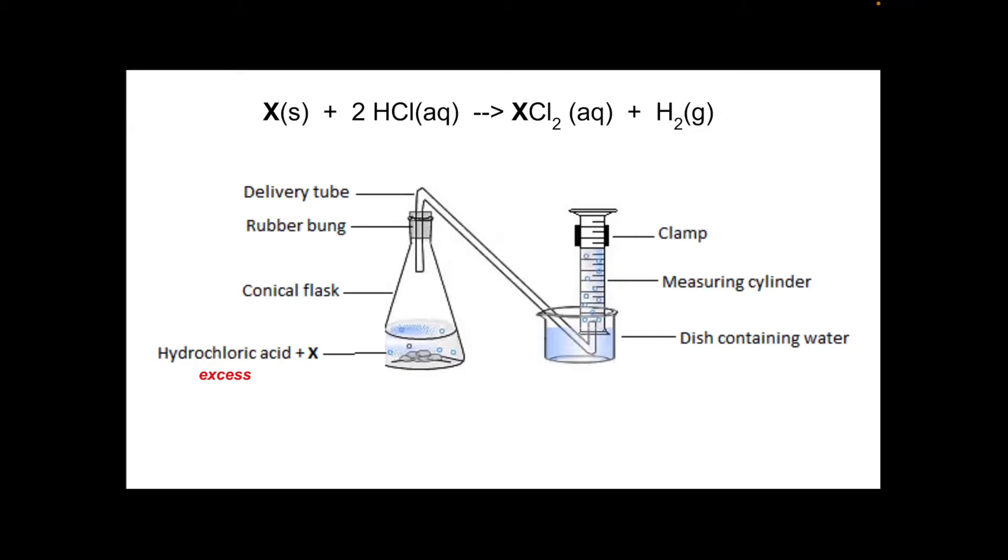The apparatus setup is fairly simple. We're going to place some excess hydrochloric acid and a measured amount of X into a conical flask. We're going to fit a delivery tube via a bung and collect the hydrogen gas over water. This will displace the water out of an upside down measuring cylinder.